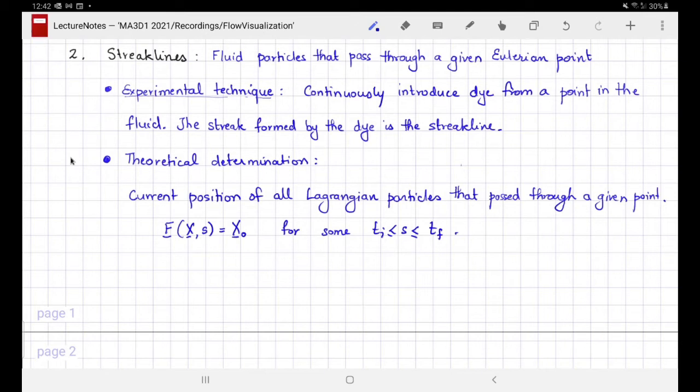That helps us construct a way for theoretically determining streak lines from a given flow. Suppose the Lagrangian position of fluid particles is denoted by F. If this position is not known, it can be constructed from an Eulerian velocity field. The current position of all Lagrangian particles that pass through a given point x₀ could be written as F(X,s)=x₀ for some s, which means for some time in the past labeled by s. So the locus of all such points gives us a streak line.